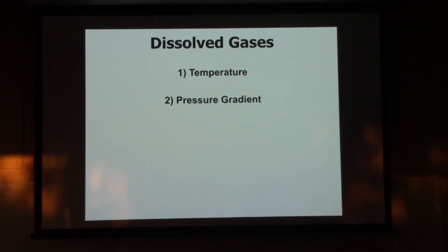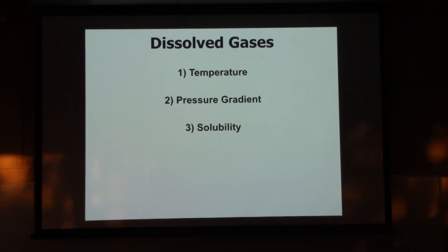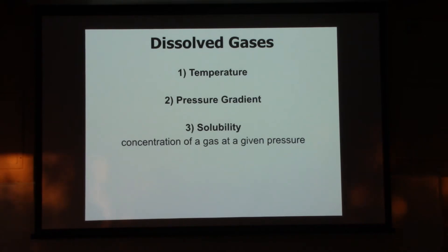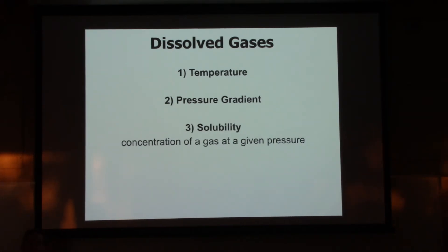So we talked about temperature and pressure gradient. Another contributor to how much gas is dissolved in a liquid is the gas's solubility. This is where we actually relate concentration to pressure - they are related, but not the same. The solubility of a gas is the concentration of the gas in a liquid at a given pressure. So if concentration goes up, the pressure goes up; concentration goes down, the pressure goes down. But the solubility of a specific gas varies depending on what fluid you're talking about - the solubility of oxygen in water is very different than in air.